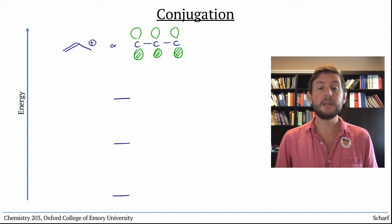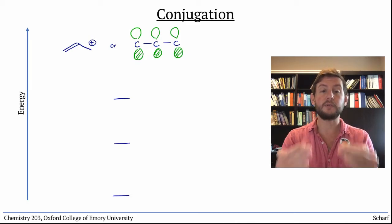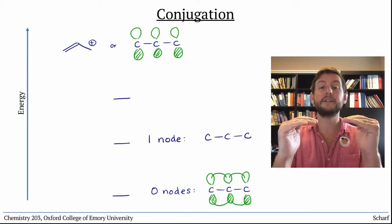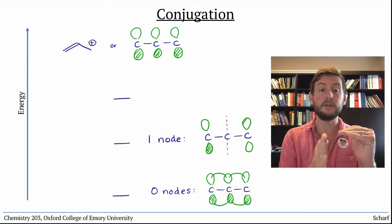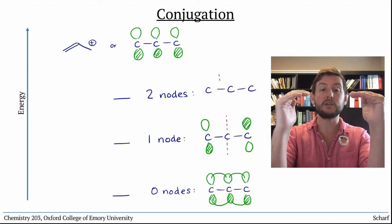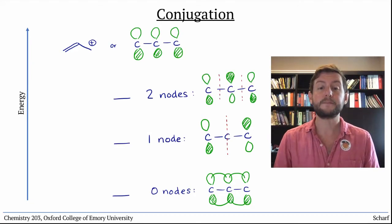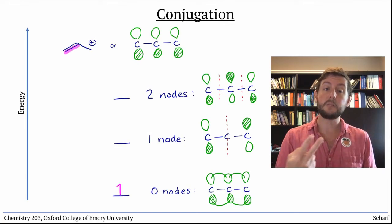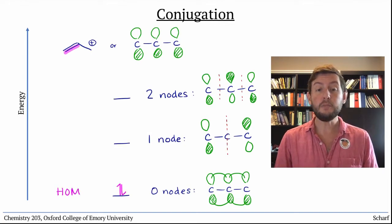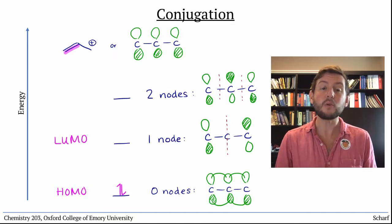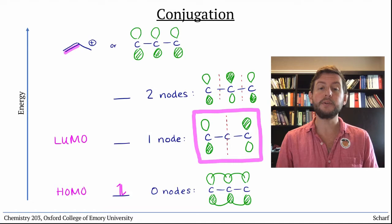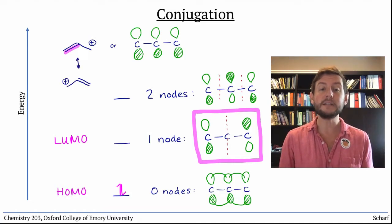Just like we did before, we'll get three new molecular orbitals: one lowest in energy with zero nodes, one higher in energy with a node right down the middle, and one highest in energy with an additional node. In the allyl cation, we have just two electrons to put into this system. So the HOMO is down here, and the LUMO is this orbital, which looks like an empty p-orbital on the two carbons at the end, just like our two resonance structures.